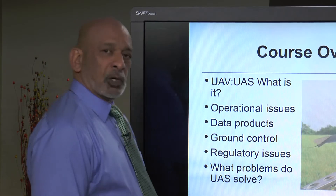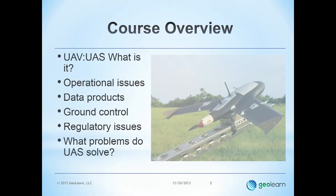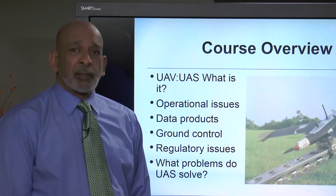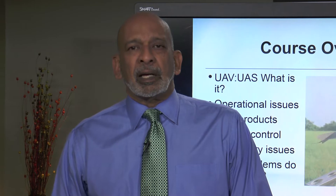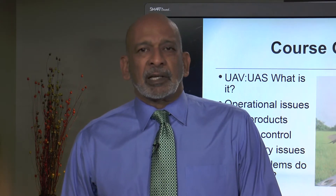In this course, we will talk about what UAVs are — and as I inferred in my introduction, technically we should be calling them UAS for Unmanned Airborne System — talk about what it is, the operational issues, some of the data products you can create in the geomatics world, issues with respect to ground control, regulatory issues, and the kinds of problems that a UAS can solve. This is an overview, so we will not go into any of these in great detail, although I have tried to provide a little bit more in terms of slides than I will actually say during this course.